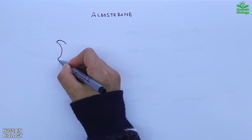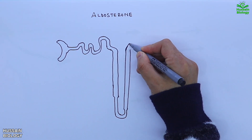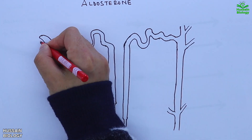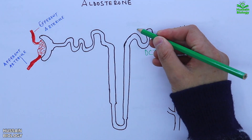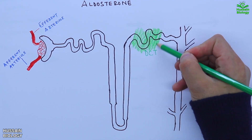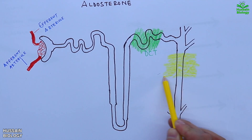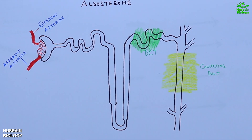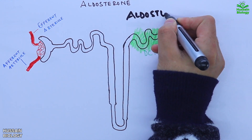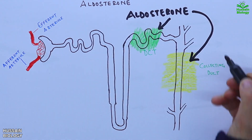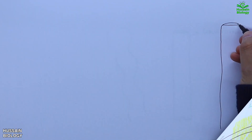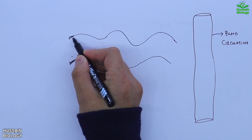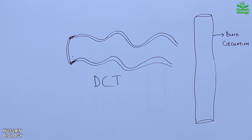Looking at the target organs of these hormones: aldosterone mainly targets the nephrons of the kidney. As shown in this diagram, we have the nephron — this part is the DCT, that's the distal convoluted tubule, and the part highlighted in yellow is the collecting duct. Aldosterone mainly targets these two regions of the nephron to regulate blood pressure.